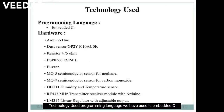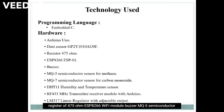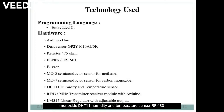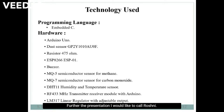The programming language we have used is embedded C. The hardware we have used includes: Arduino, dust sensor GP2Y1010, resistor of 470 ohm, ESP8266 Wi-Fi module, buzzer, MQ5 semiconductor sensor for methane, MQ7 semiconductor sensor for carbon monoxide, DHT11 humidity and temperature sensor, RF 433 MHz transmitter-receiver module with Arduino, and LM317 linear regulator with adjustable output. For the next part of the presentation, I would like to call Rossi.